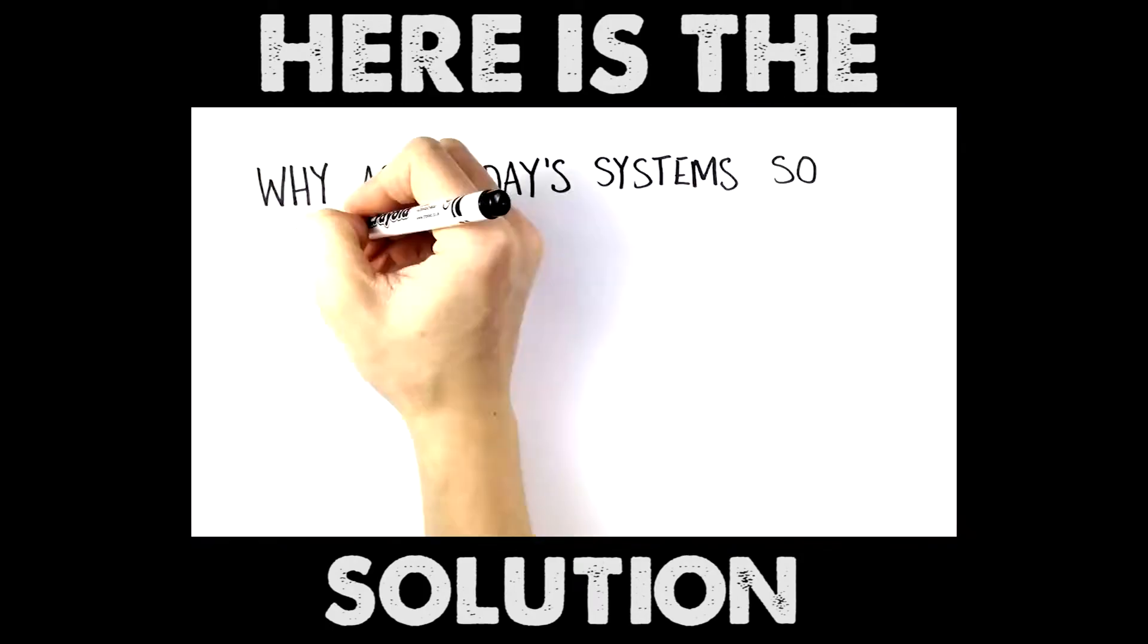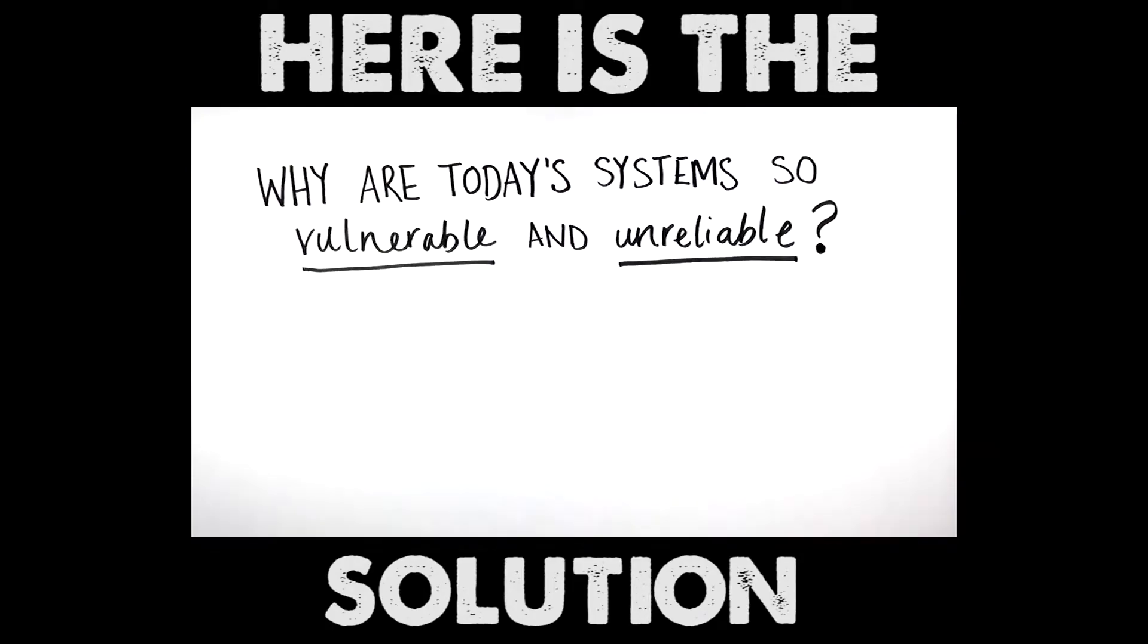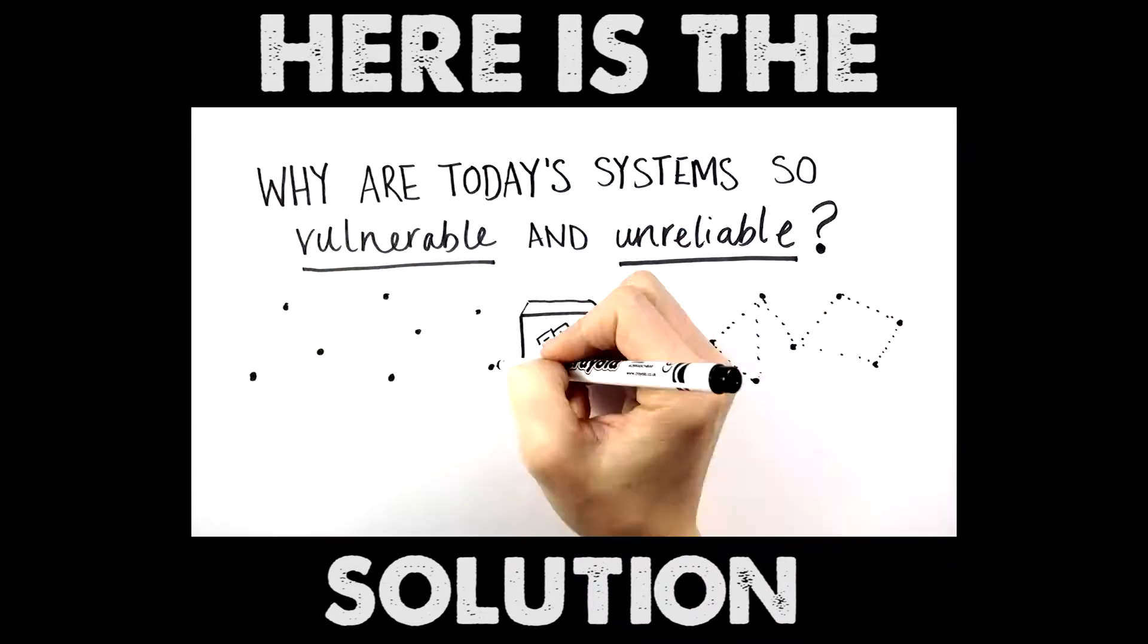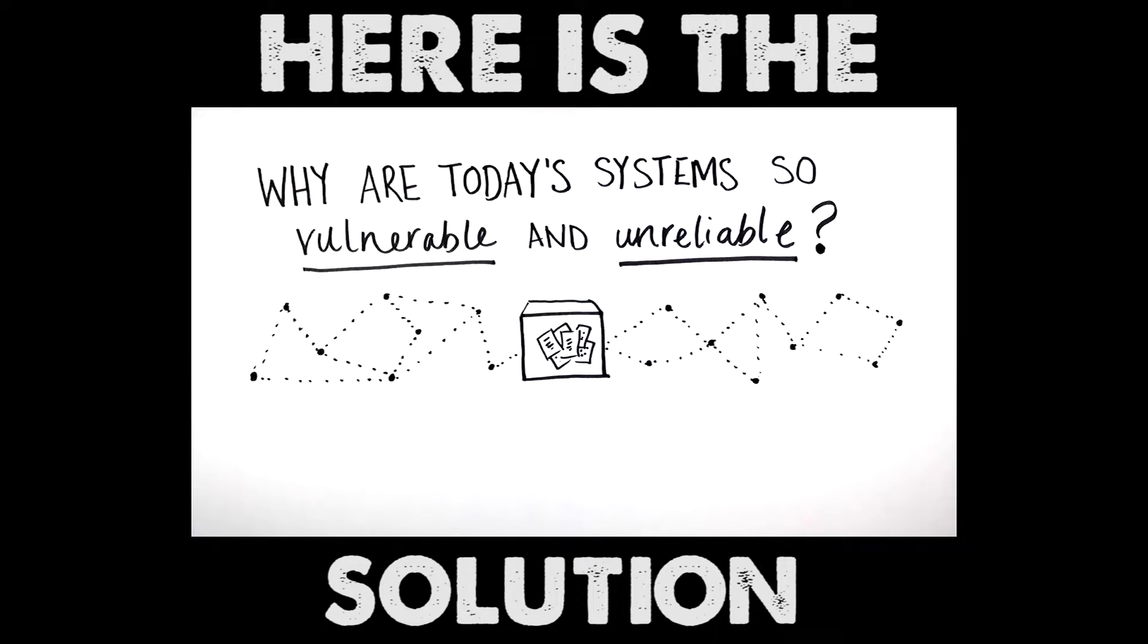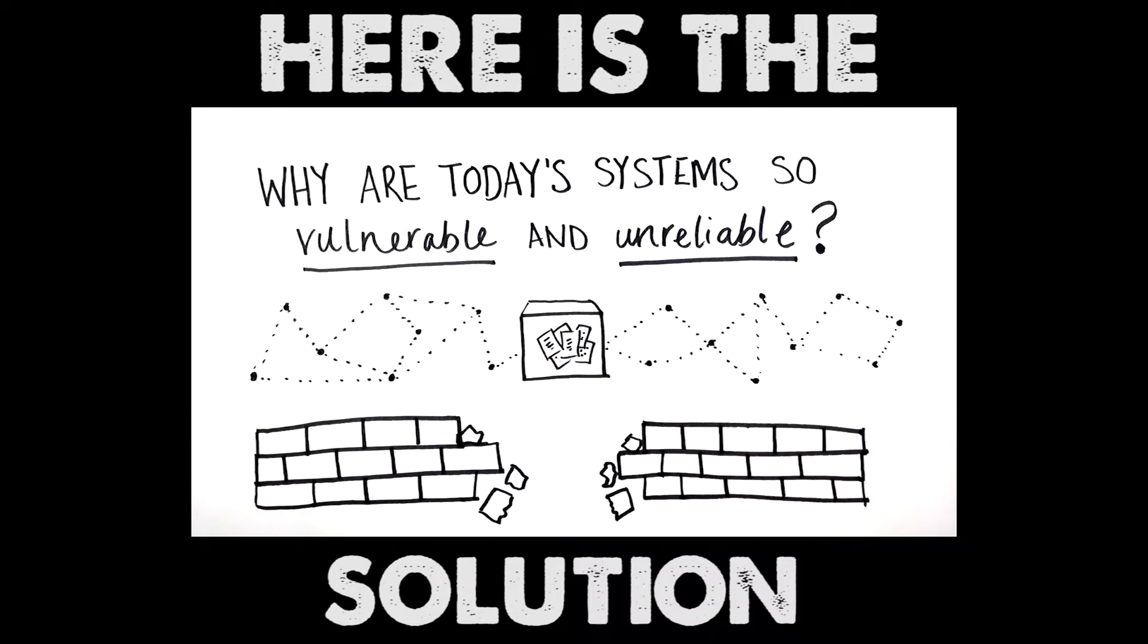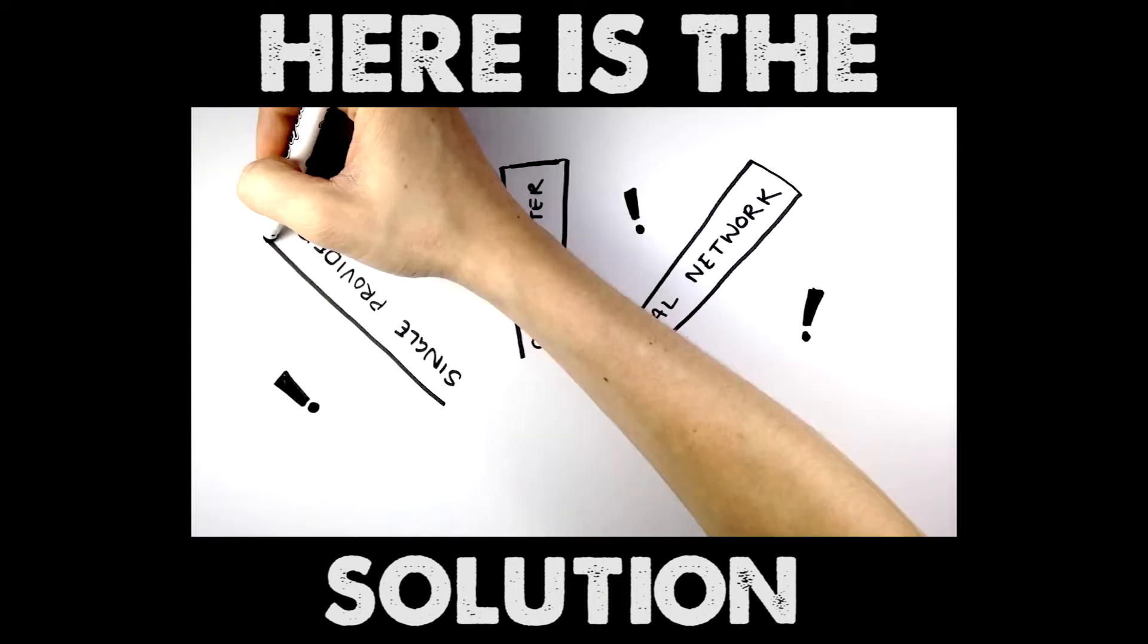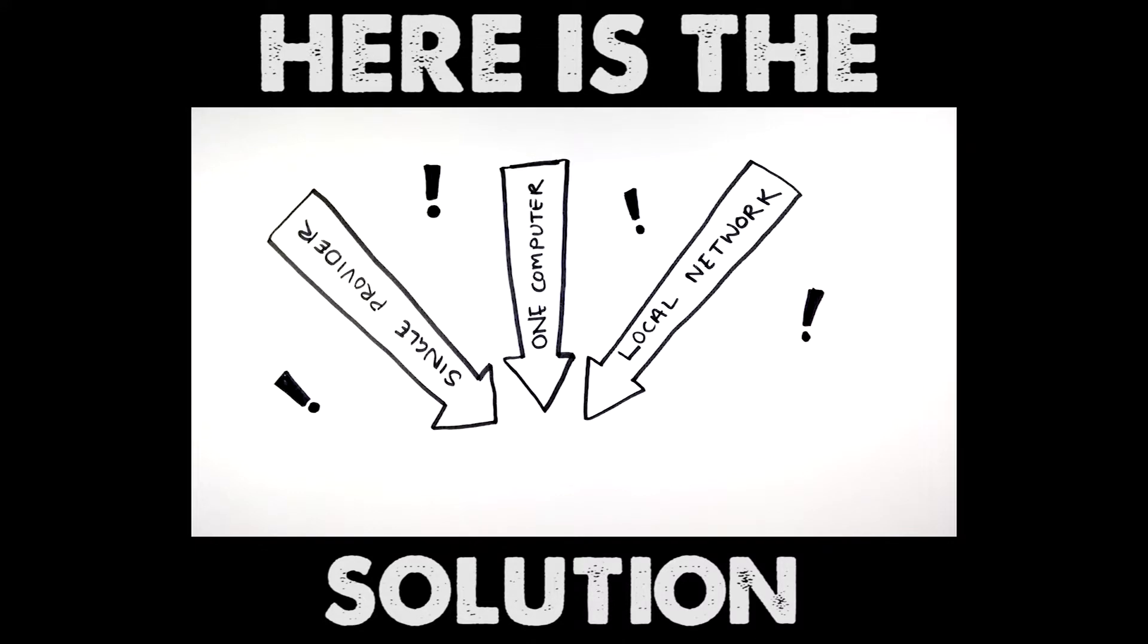Why are today's systems so vulnerable and unreliable? Because today our internet consists of servers and connected computers in which the files are normally stored in one place as complete files readable by anyone. If the walls of system security are penetrated, the data is ripe for the picking. Even if the data has been encrypted, if it is all in one computer, a single provider or a local network, it can still be stolen or erased. Today's data is not physically secured from any third parties.